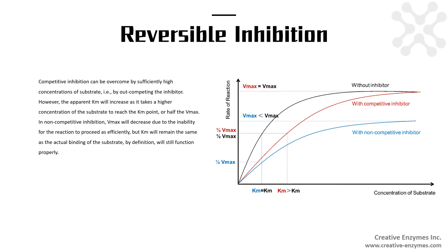Competitive inhibition can be overcome by sufficiently high concentrations of substrate, for example, by out-competing the inhibitor. However, the apparent Km will increase as it takes a higher concentration of the substrate to reach the Km point, or half the Vmax.